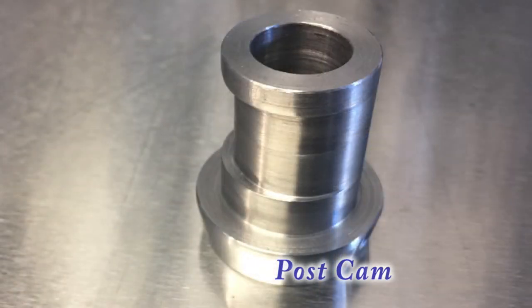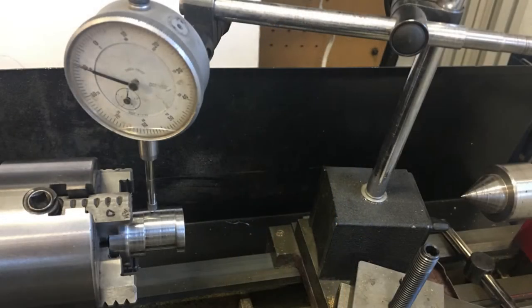The post cam needs to be chucked in a four jaw chuck. The cam offset is about 90 thousandths of an inch. A dial gauge can be used to achieve the correct offset.